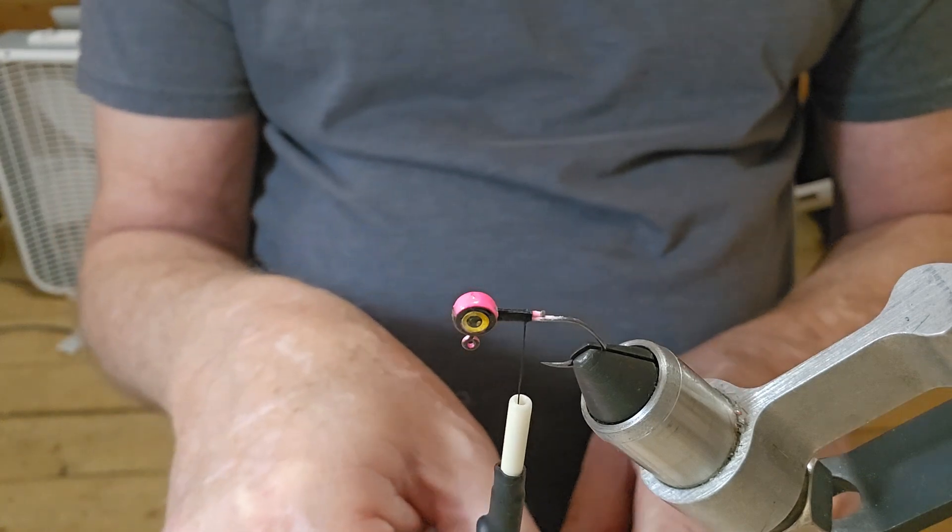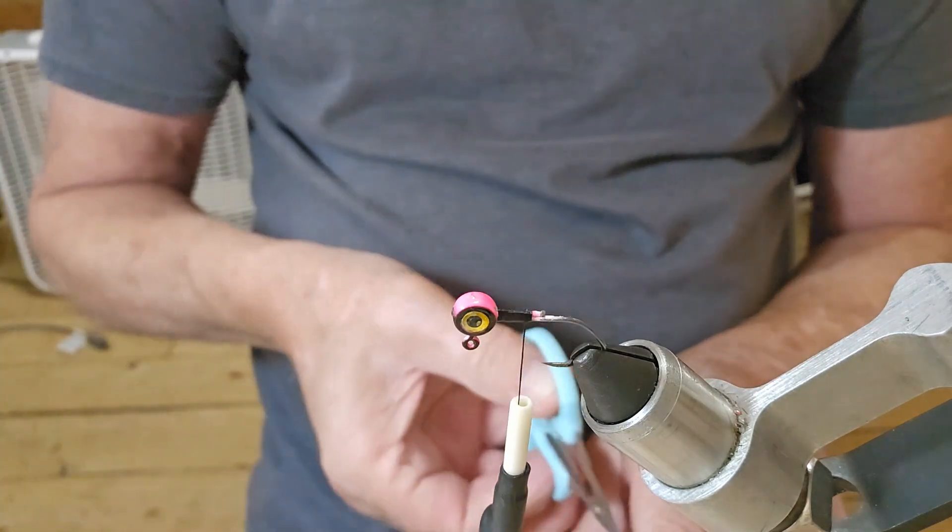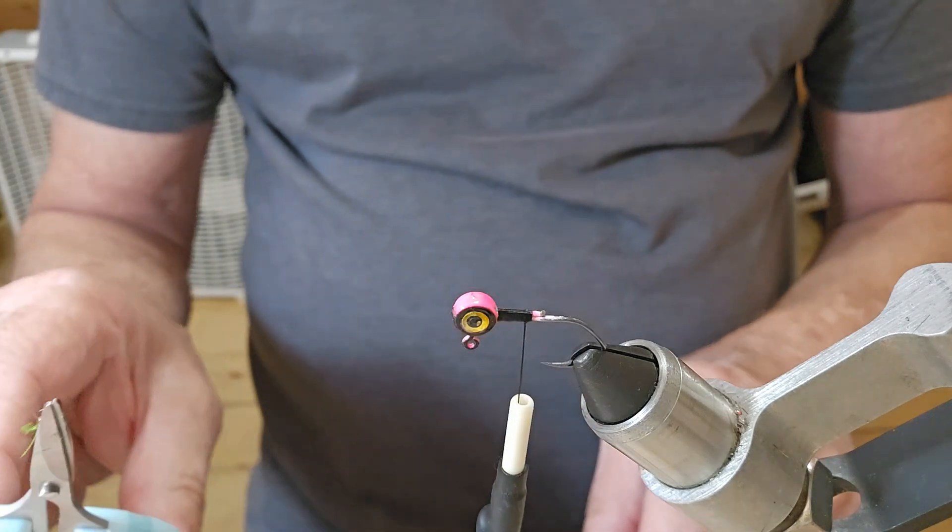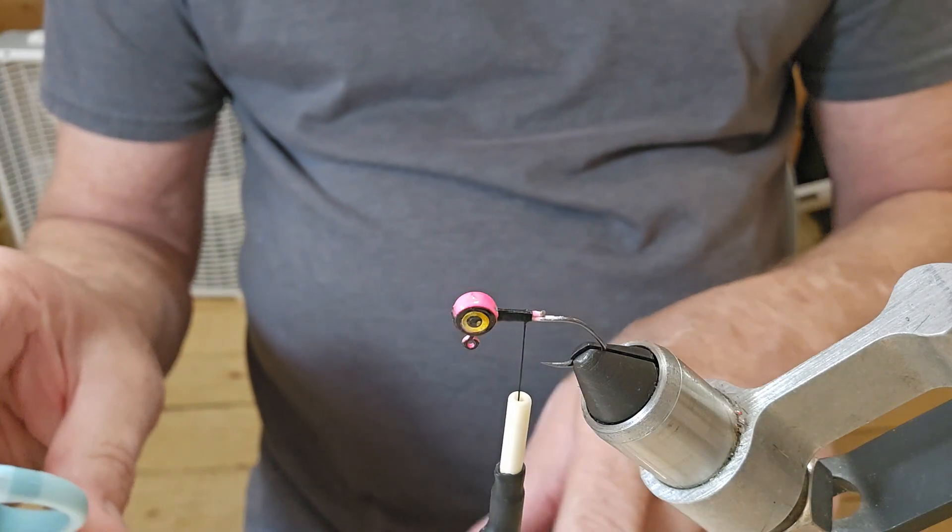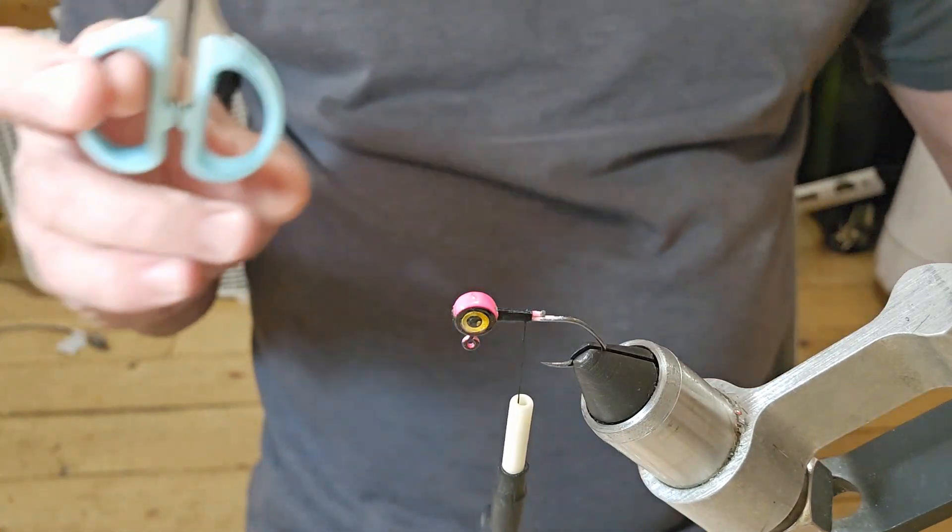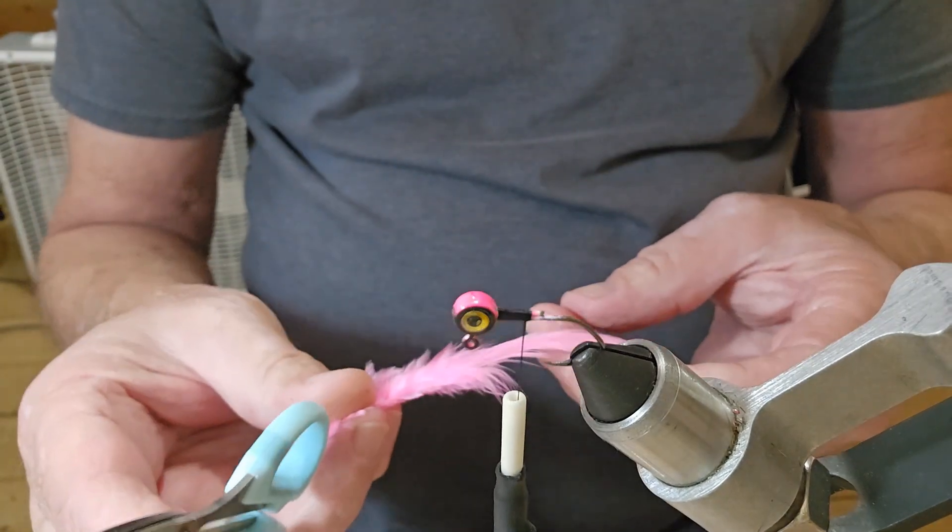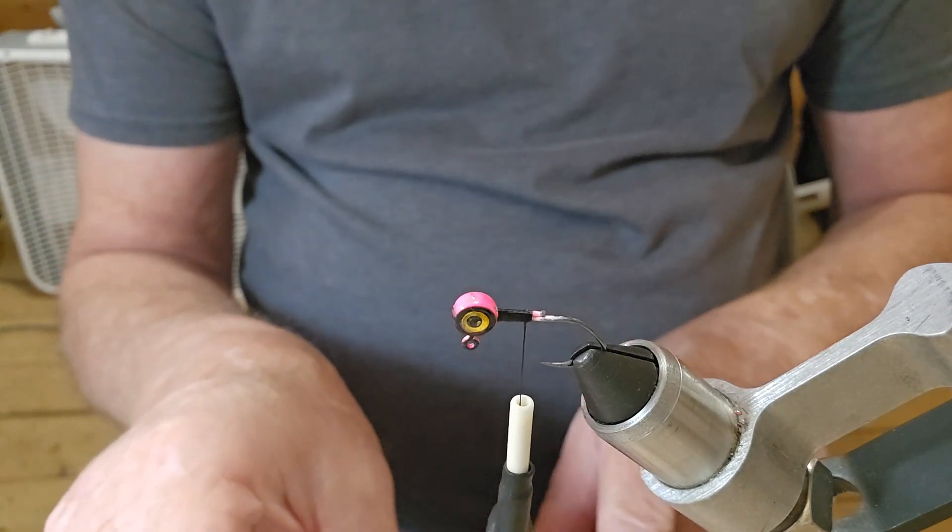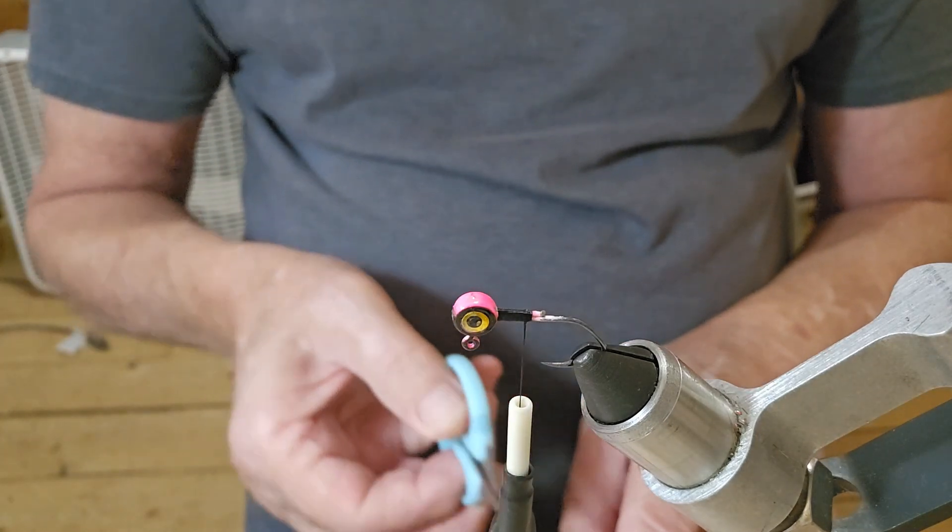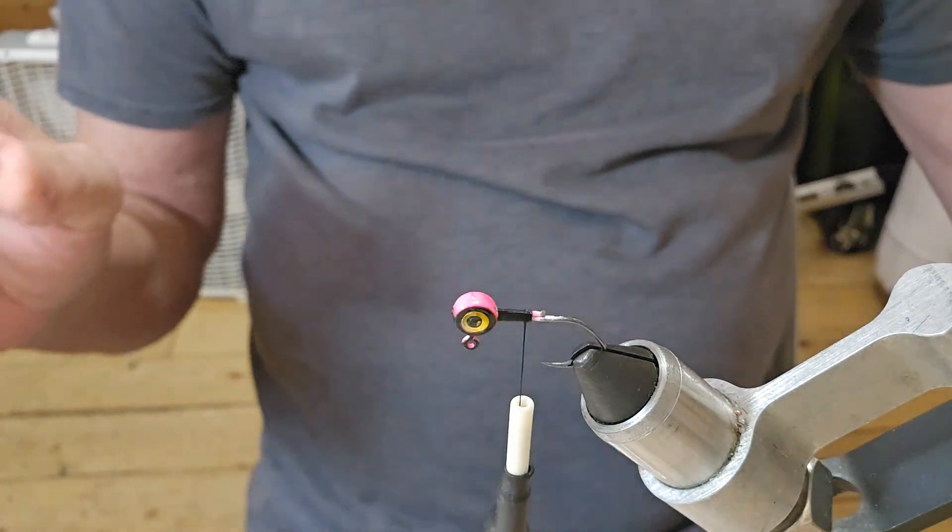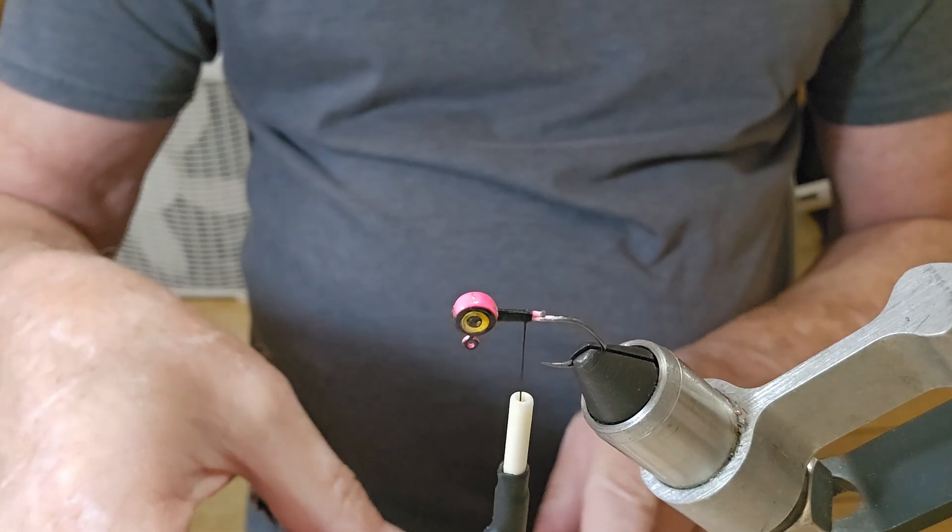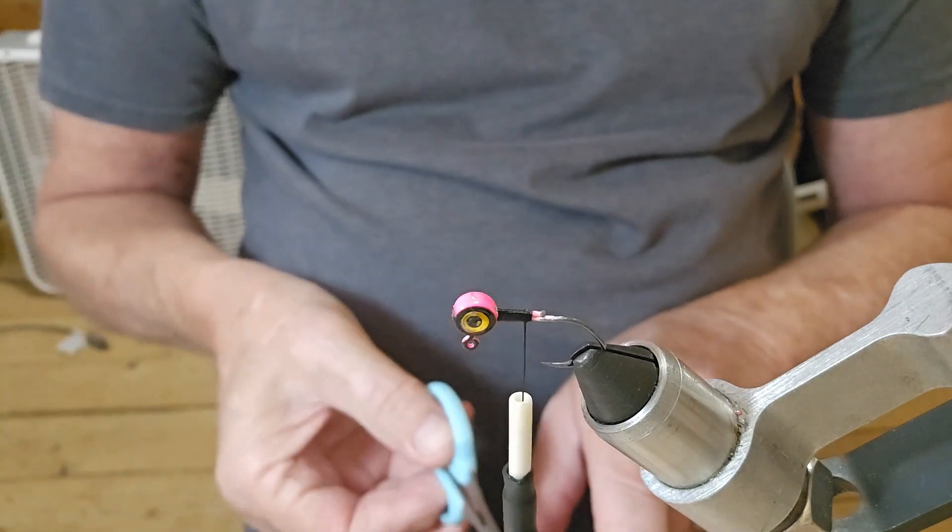Those Bomb Bite jig heads, they're much better. You get 40 of them for like $14 and that wire keeper hook there, you can just take and twist it off on those, doesn't mess the jig head up. But I've got these and I've got to try to use them up, so we'll see what we can do with it.